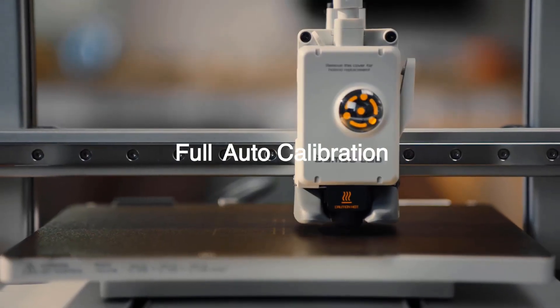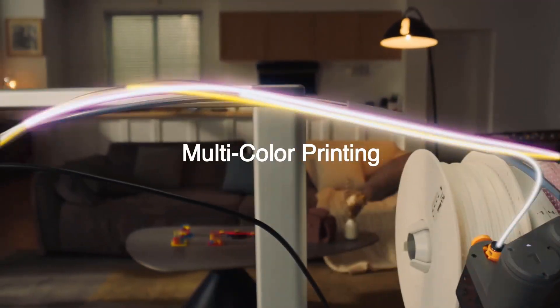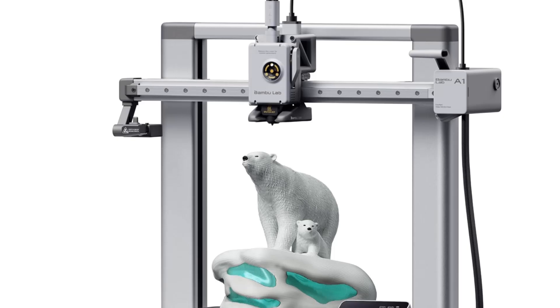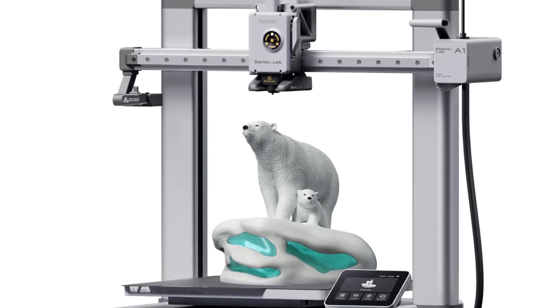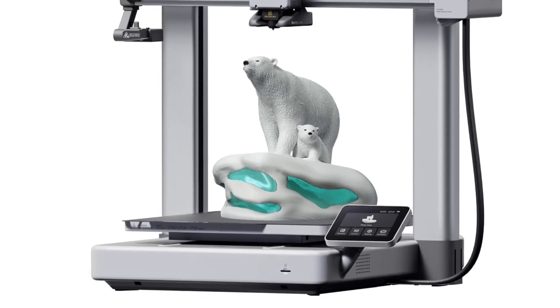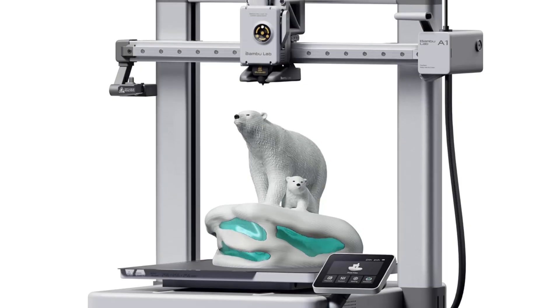As with the A1 Mini, the A1 is a bed slinger-style printer, though with two vertical gantries to the A1 Mini's single gantry. With a bed slinger, the extruder moves up and down and from left to right. The print bed stays level but moves to the rear and front. Compare that with the Core-XY design, which has the print bed moving vertically while the extruder moves forward and backward and left and right.